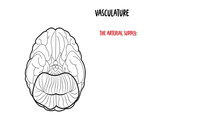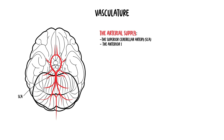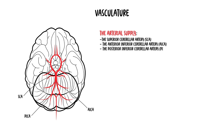Now onto the vasculature — the blood supply. The blood supply of the cerebellum comes from three paired arteries: the superior cerebellar artery, the anterior inferior cerebellar artery, and the posterior inferior cerebellar artery.